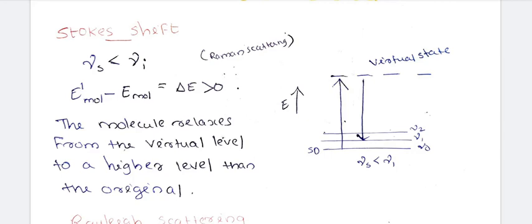If you start from the ground state (ν = 0), you will go to a new virtual state. Delta E is greater than zero.